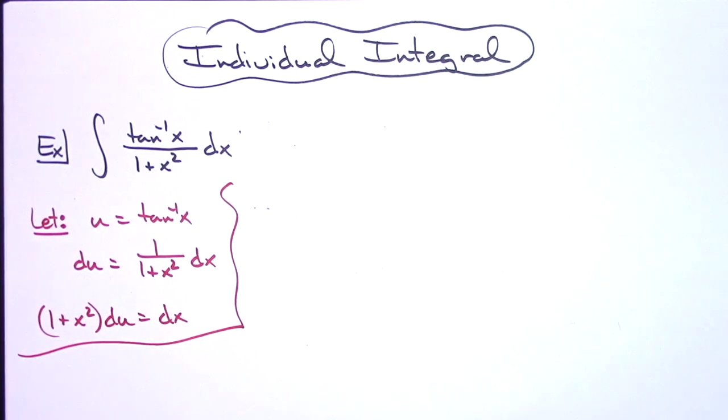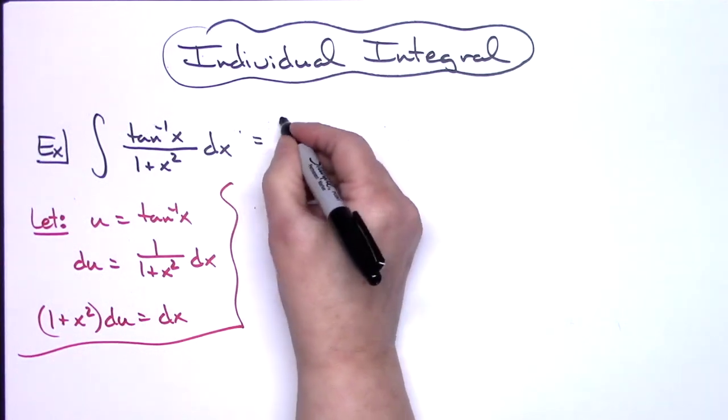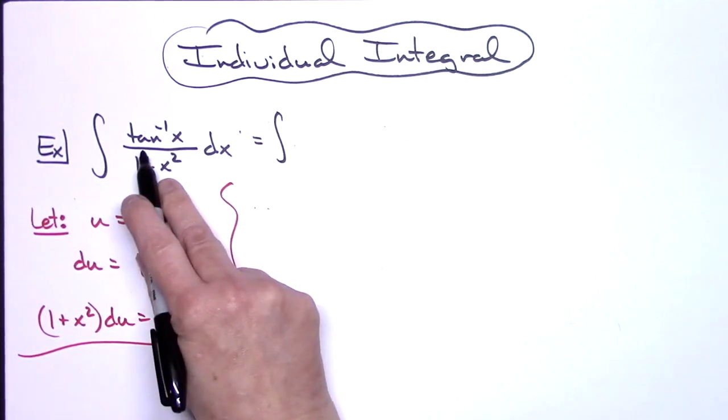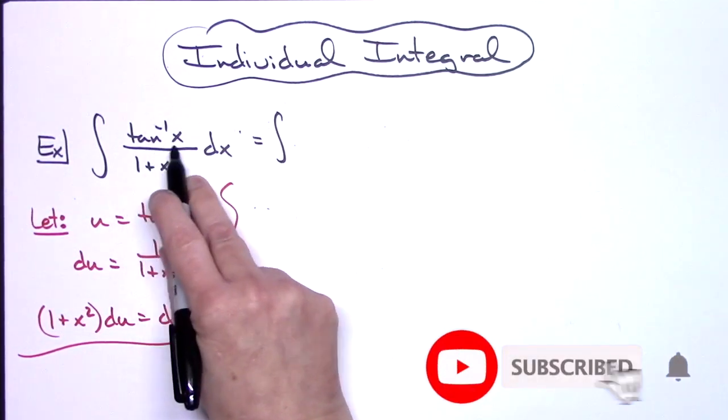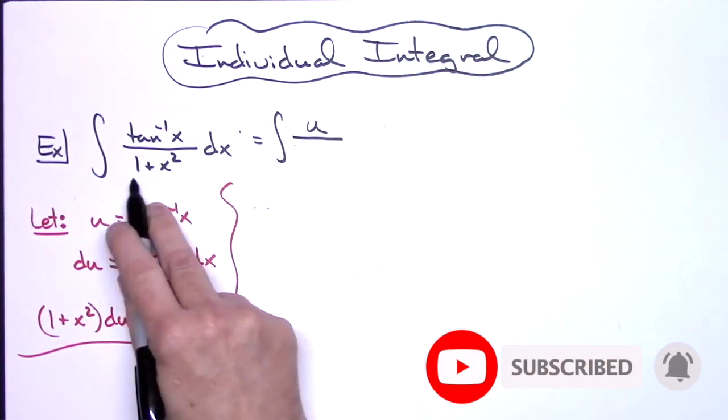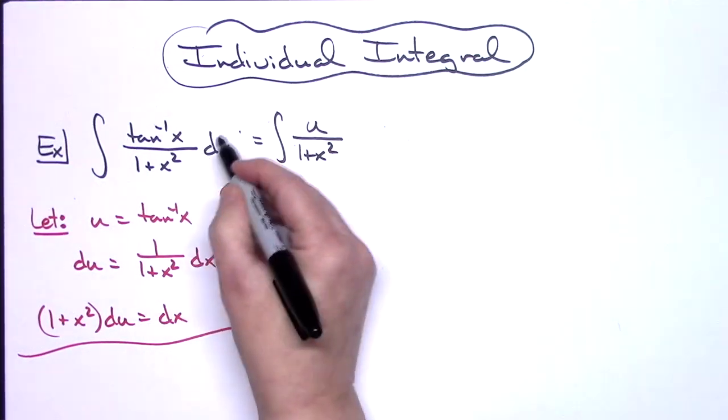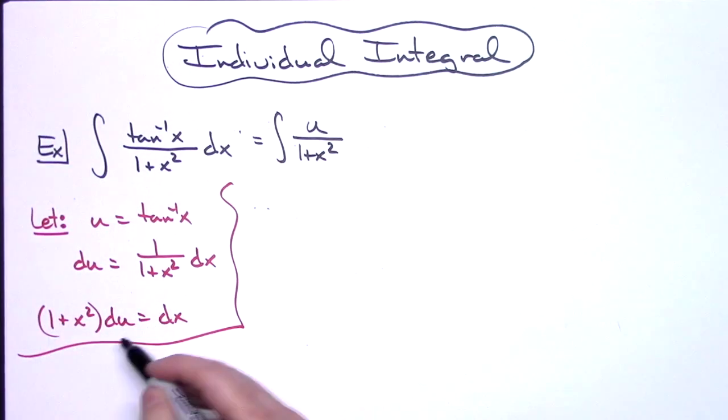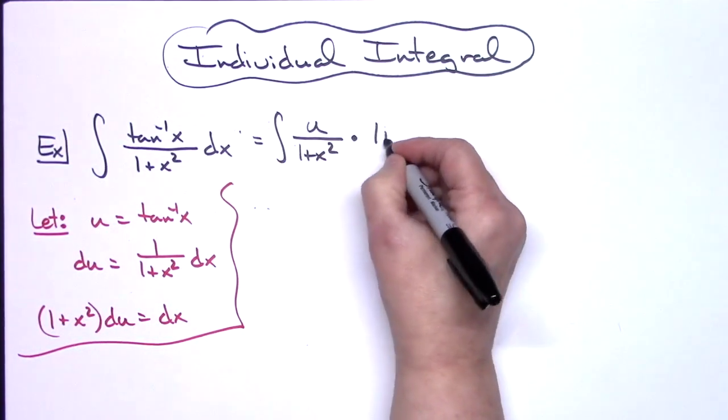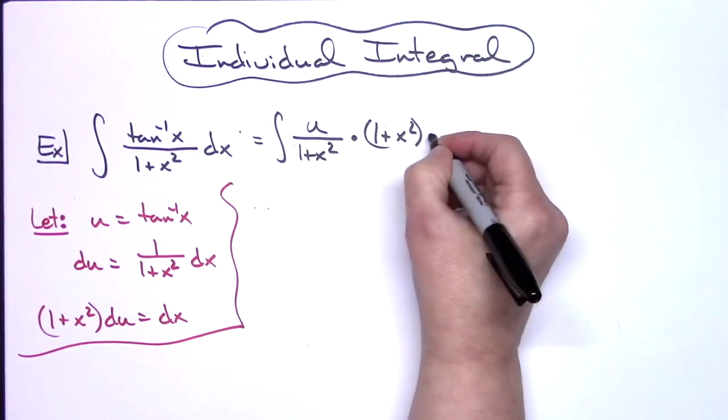I'm going to come back up here now and start making some substitutions. I can replace the inverse tangent of x there with my u. I'm going to leave the 1 plus x squared in the bottom. My dx can be replaced with 1 plus x squared and then du.